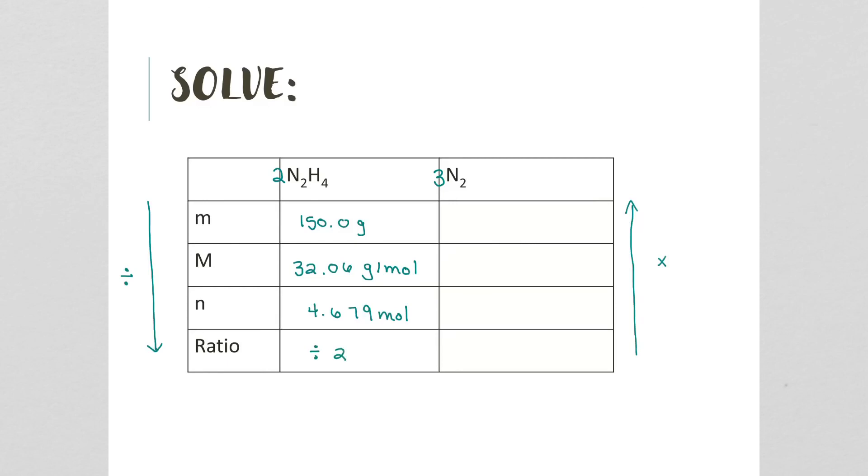Then multiply by 3. 4.679 divided by 2 is 2.3395, then we times it by 3, so we get a value of 7.0185 moles of nitrogen.